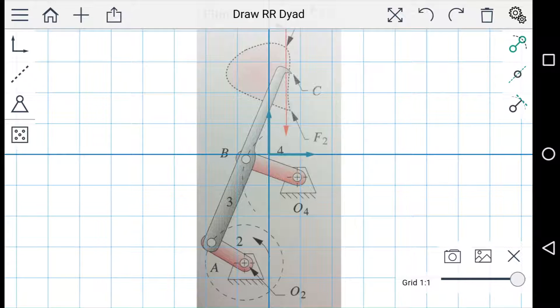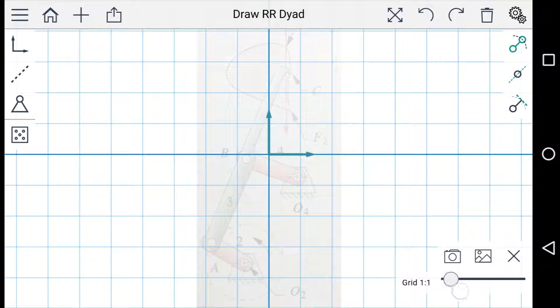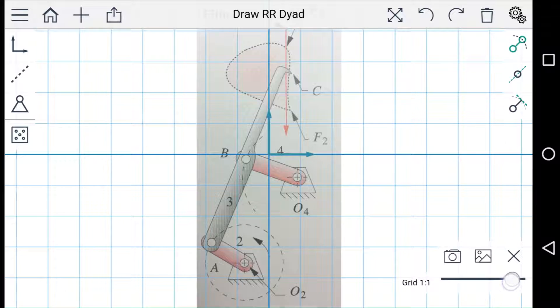So this is a mechanism from a textbook, and it's a film advance mechanism from a film camera. You can use this slider to adjust the opacity of the image to make it easier to see either the image or the linkage. So we can recreate this mechanism in MotionGen.